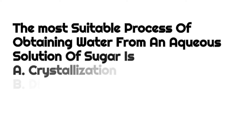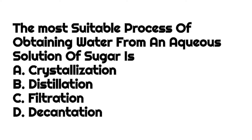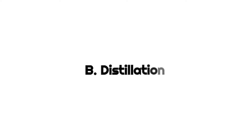The first question: the most suitable process of obtaining water from a dilute solution of sugar is — a) crystallization, b) distillation, c) filtration, and d) decantation. Our answer is b) distillation.